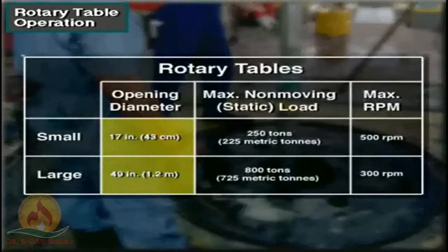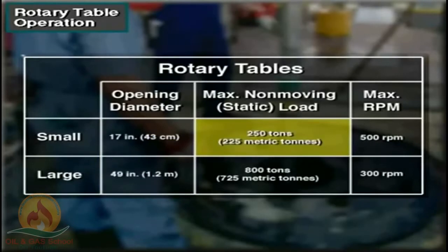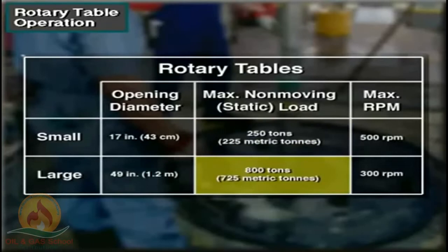Rotary tables have openings that range in diameter from 17 to 49 inches, or 43 centimeters to about 1.2 meters. The smallest can hold a non-moving load of 250 tons, about 225 metric tons. The largest can hold a non-moving load of 800 tons, about 725 metric tons.